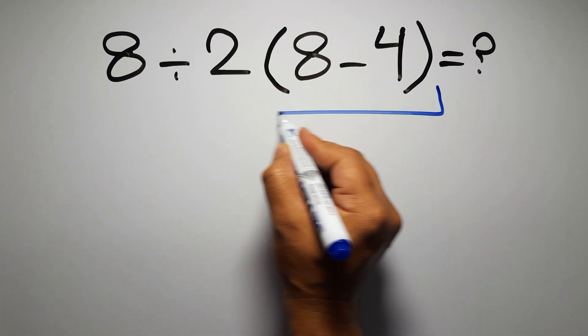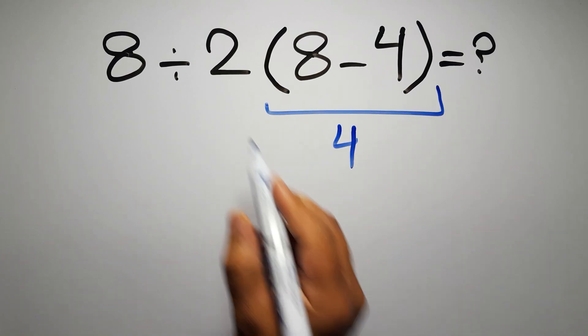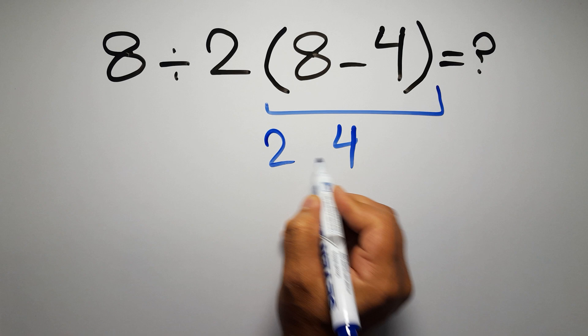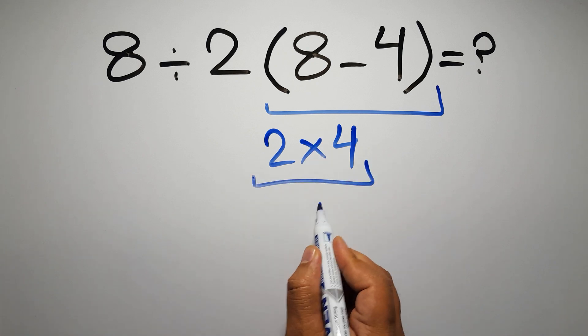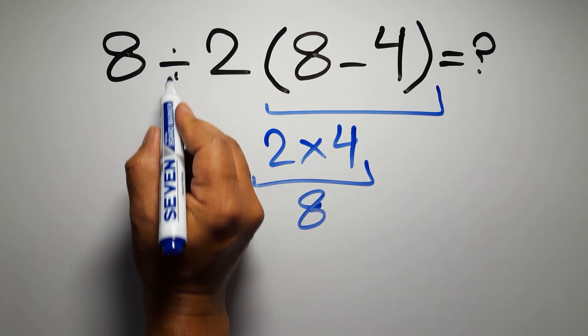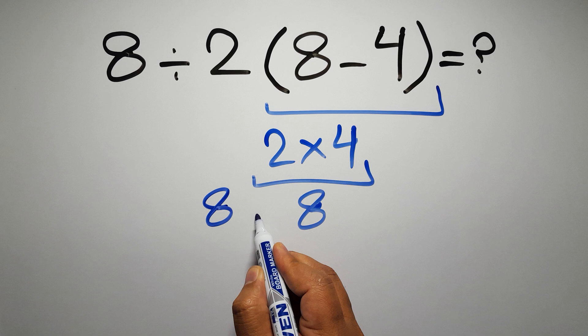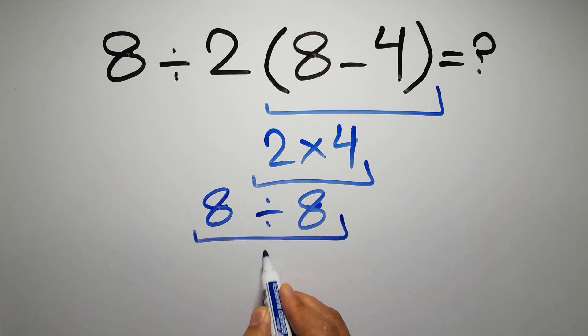8 minus 4 equals 4, and 2 times 4 gives us 8, so 8 divided by 8 is just 1. But this answer is not correct,